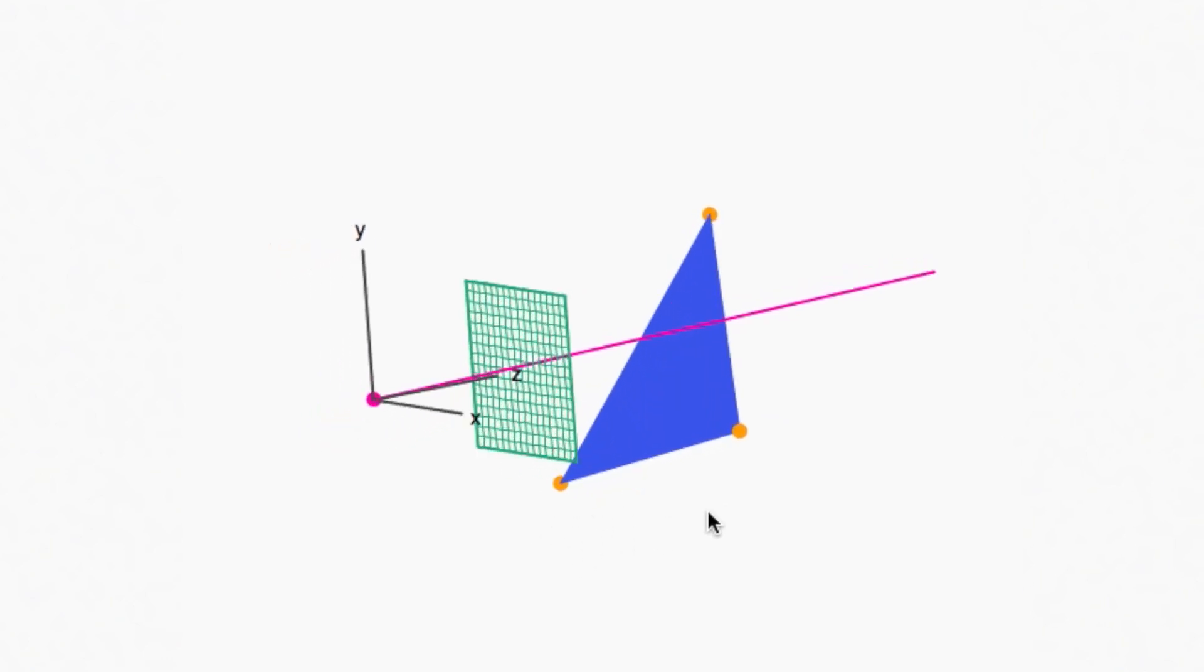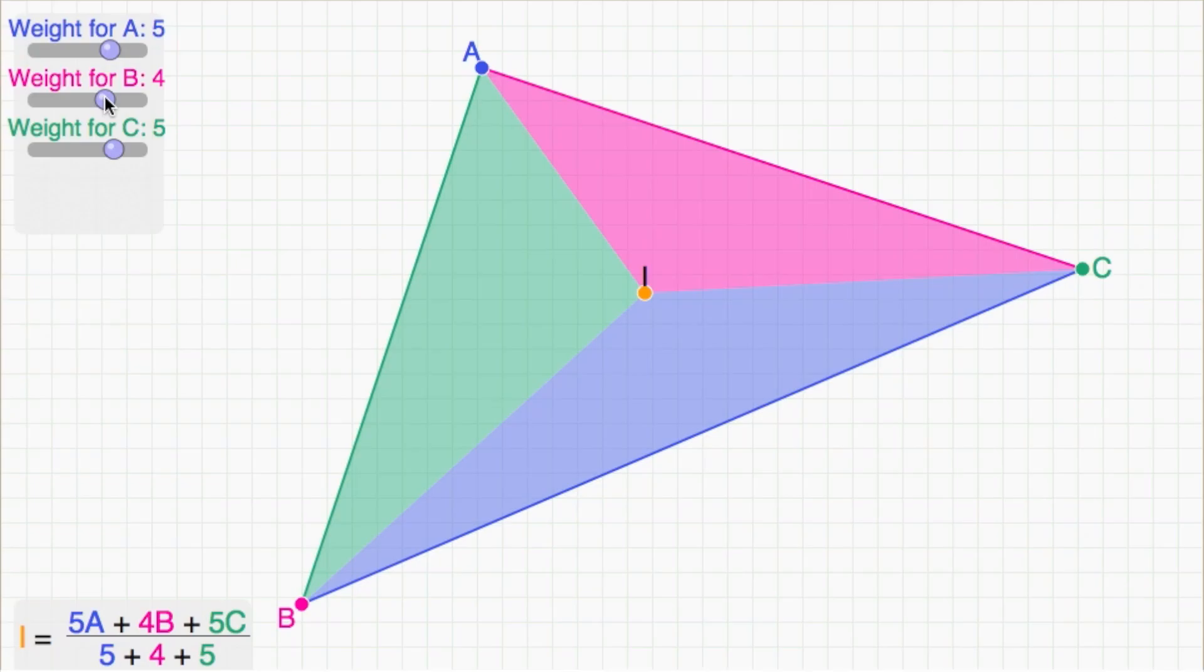The method our raytracer actually uses makes use of vector algebra, but a method that is essentially the same is easy to explain if you understand weighted averages.